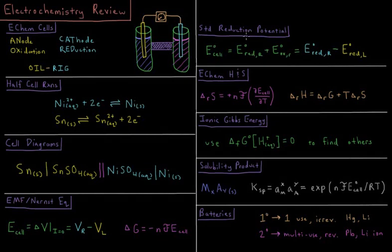We can get the standard EMF of a cell by getting the standard reduction potential of our cathode plus the standard oxidation potential of our anode. But the standard oxidation potential is the negative standard reduction potential. So what we typically do is look up in tables each half-cell reaction's standard reduction potential, then take the value for the cathode and subtract the value for the anode on the left.